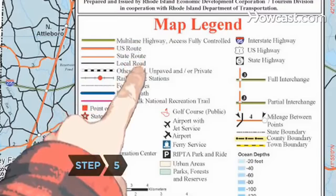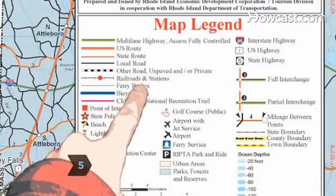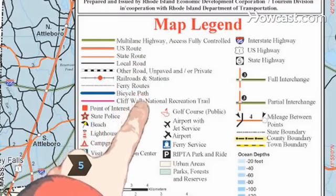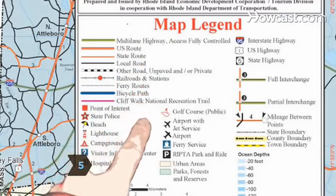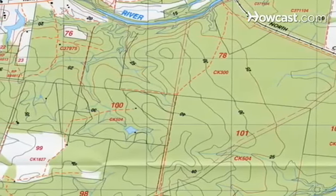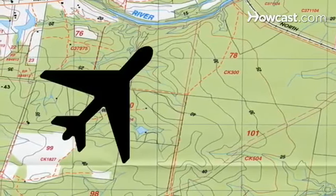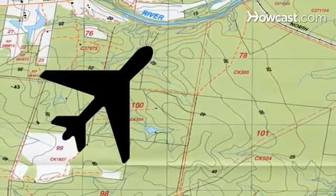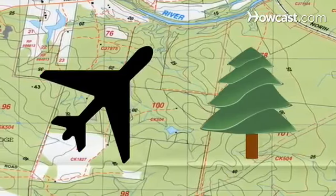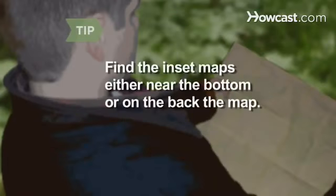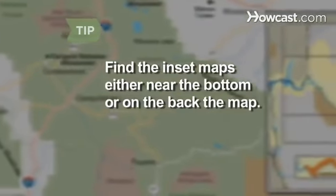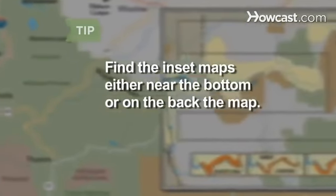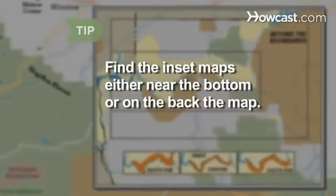Step 5. Learn the symbols by finding the map key, which is usually near the bottom. The map key tells you what the symbols on the map represent, such as an airplane for an airport or a tree to symbolize a park. If you're looking at a large area map but want a more detailed look at a city or area, find the inset maps, either near the bottom or on the back of the map.